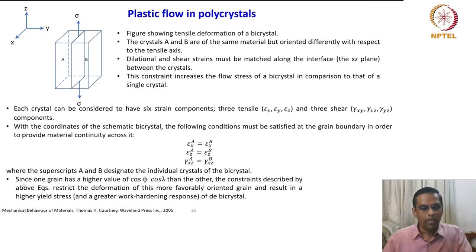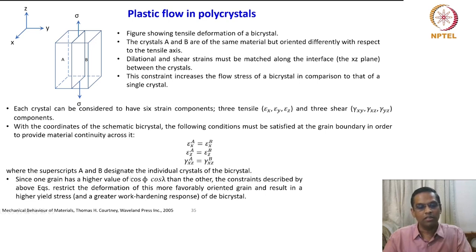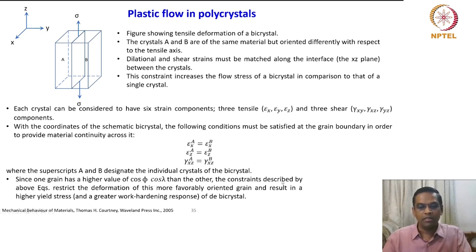What is the problem here? Since one grain has a higher value of cos phi and cos lambda — which is nothing but the Schmid factor — the constraints described by the above equations restrict the deformation of the more favorably oriented grain and result in a higher yield stress and a greater work hardening response of the bicrystal.